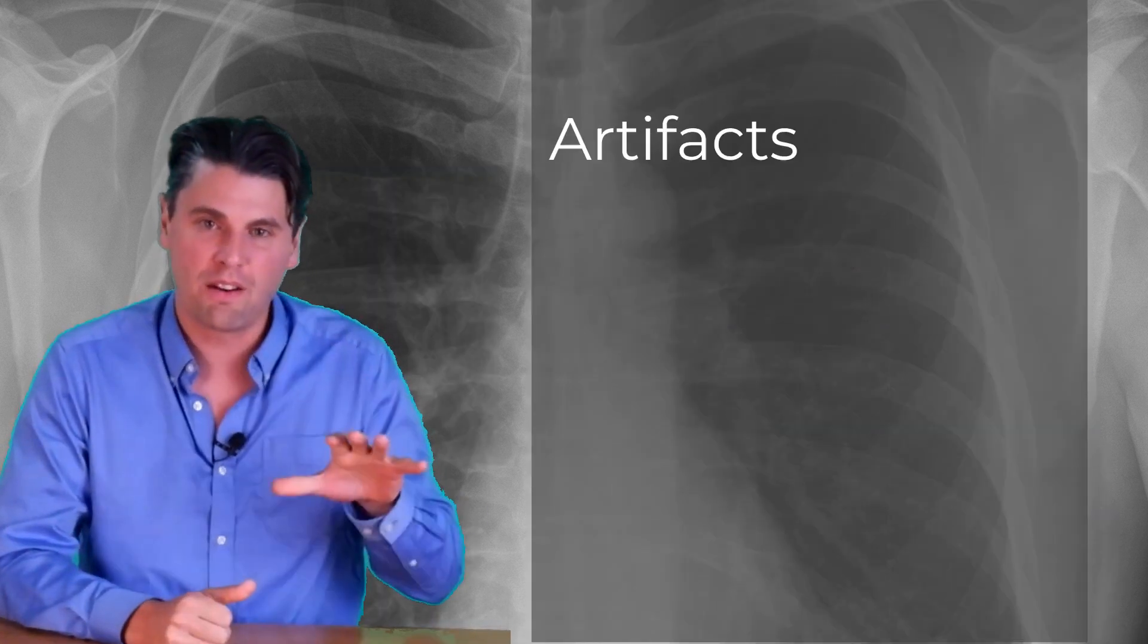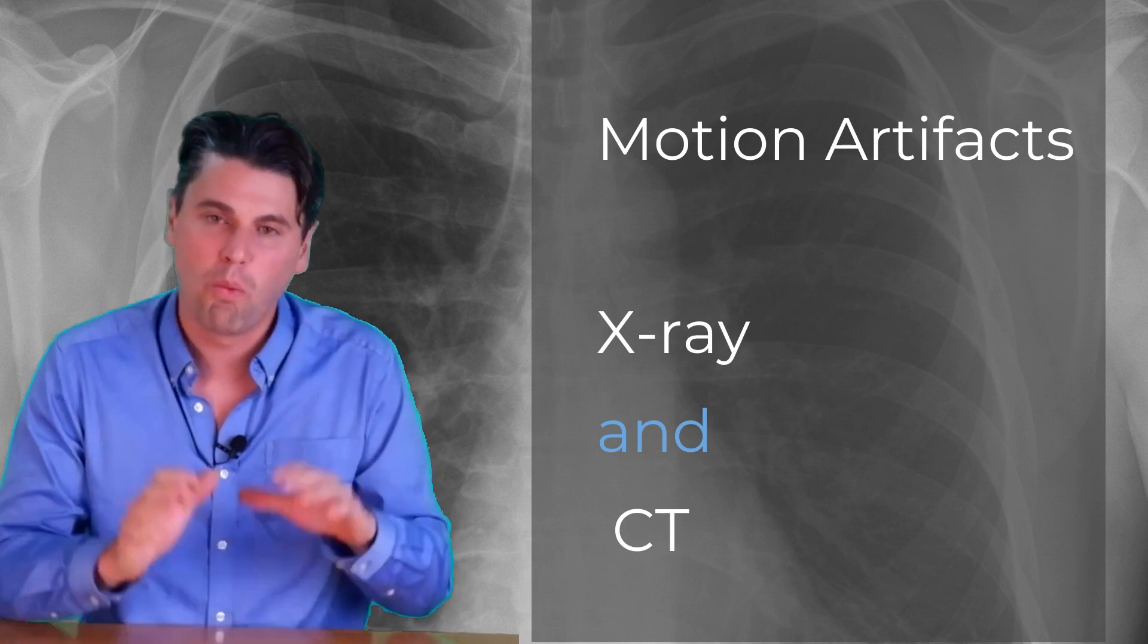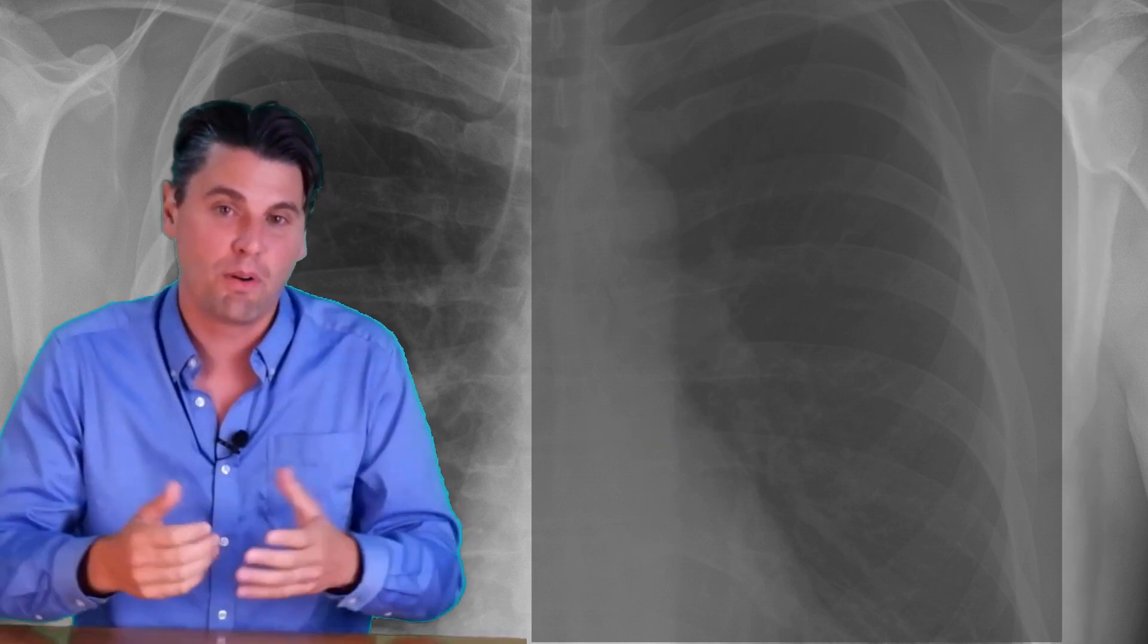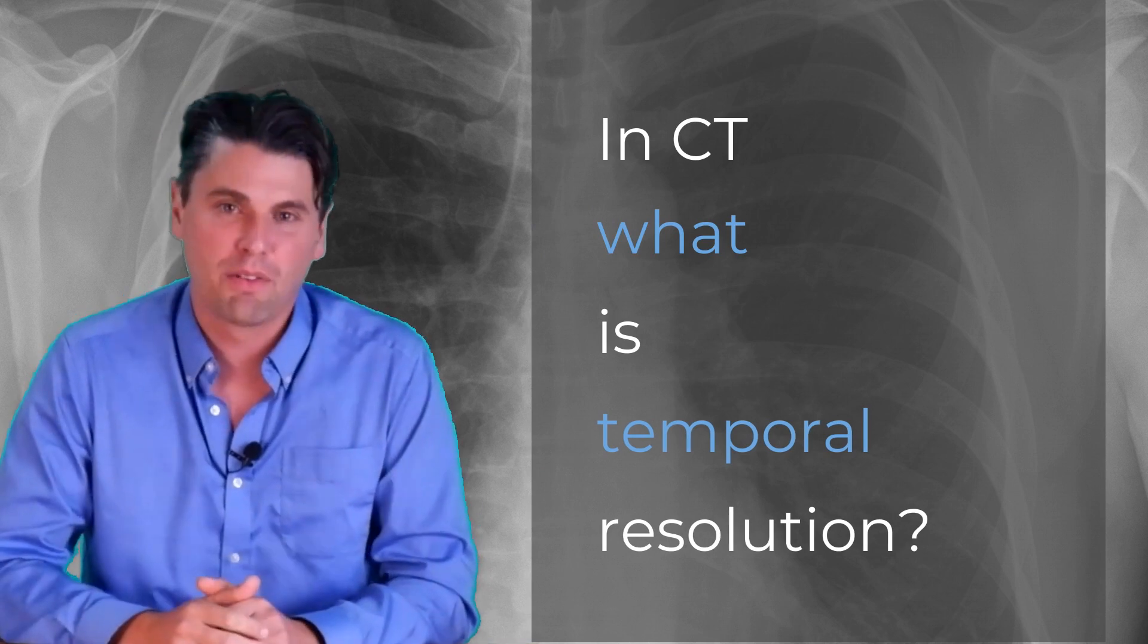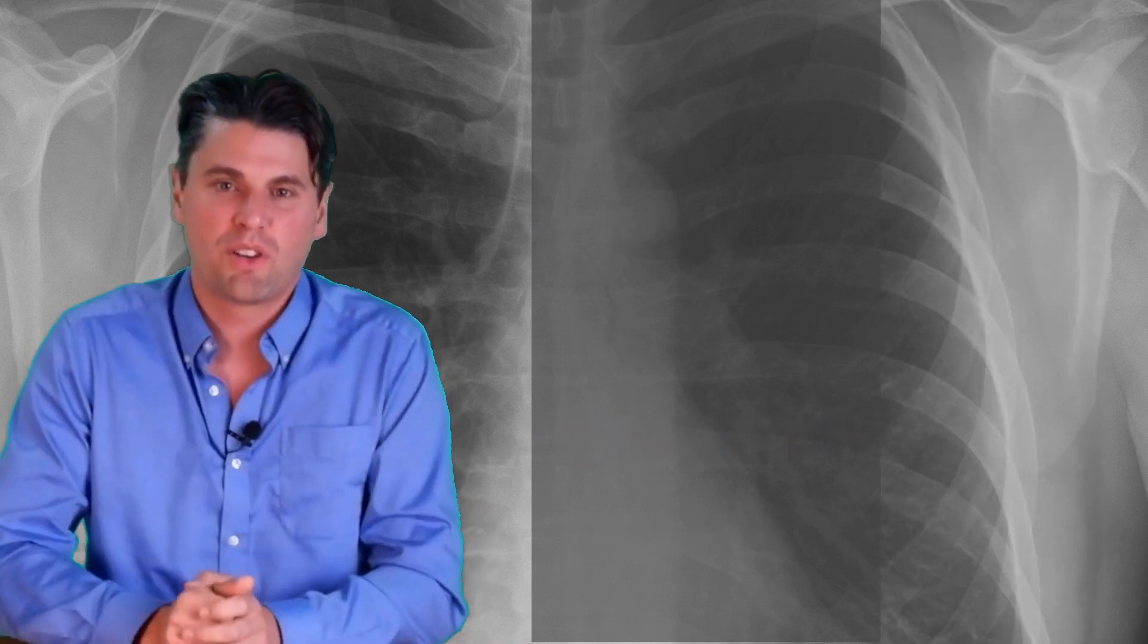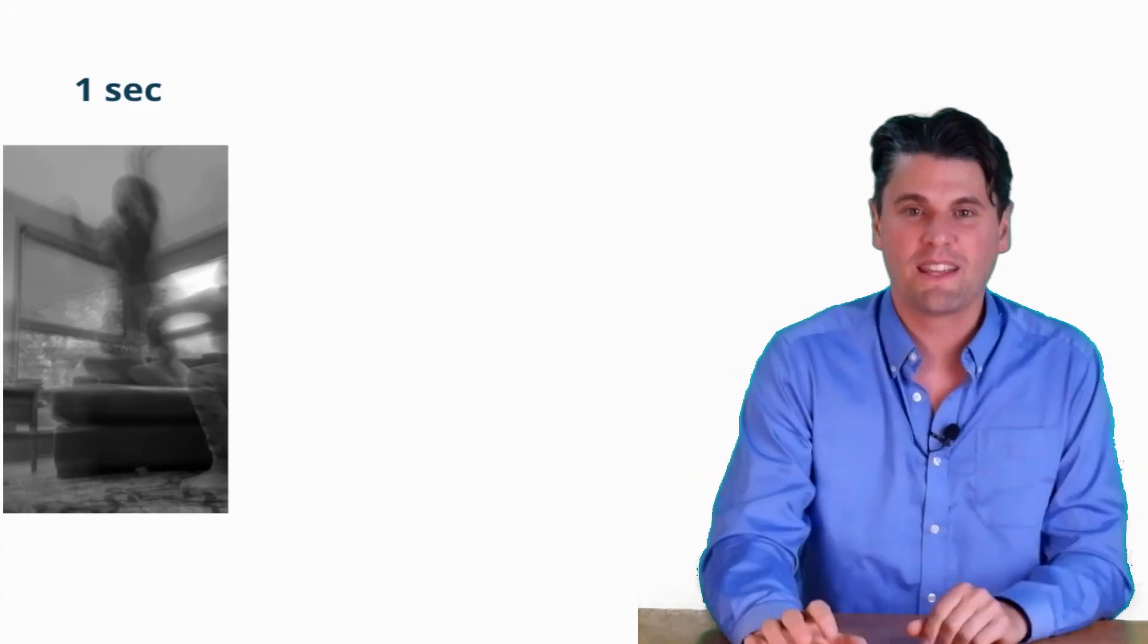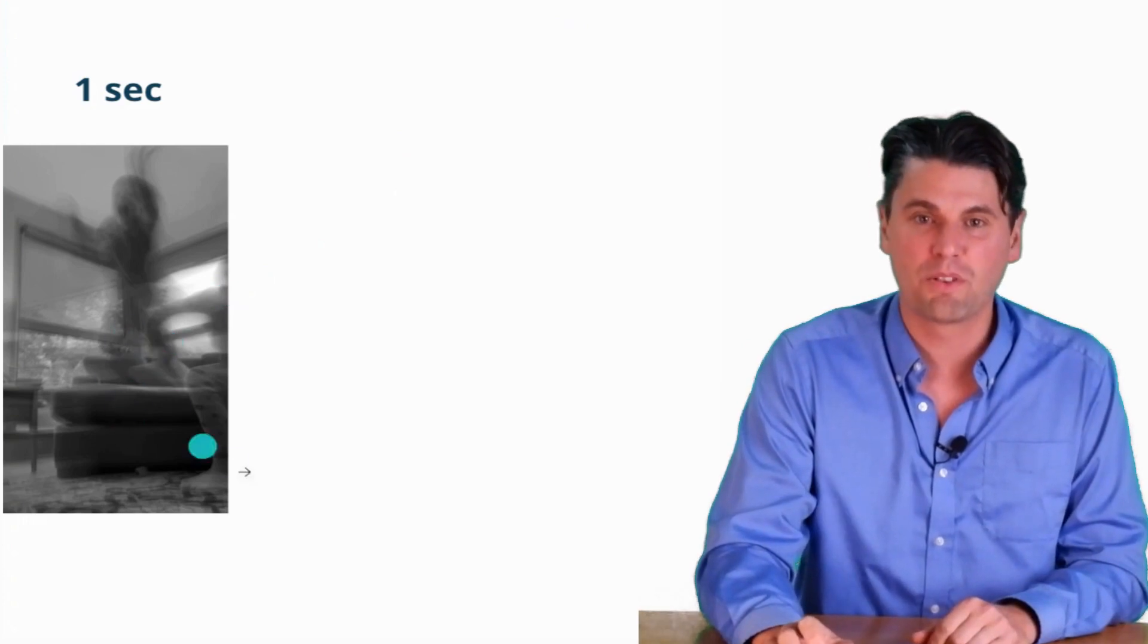We're going to go through the theory at a high level behind why the images are degraded when there's motion in x-ray and CT imaging. So you probably have a really good feeling of motion artifacts with photography that you're used to, especially if you've been using cameras for some time. When you have a relatively longer exposure time, you could get an image which looks like this. So this is a one second exposure time.